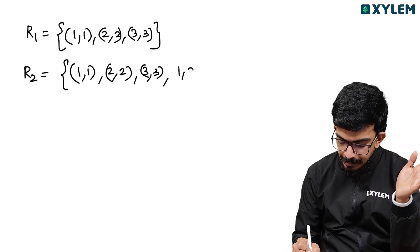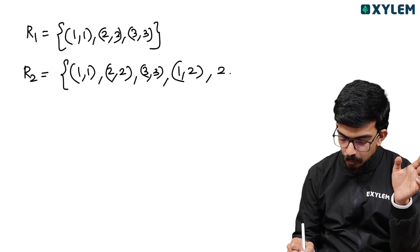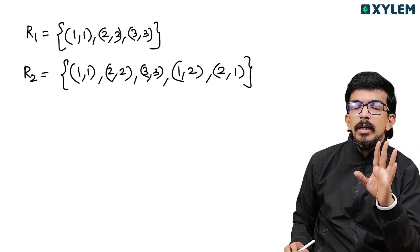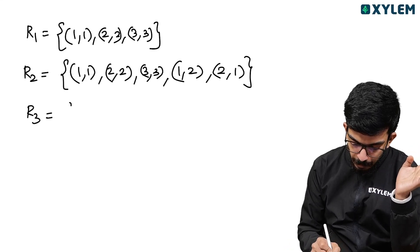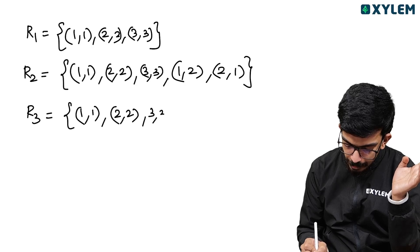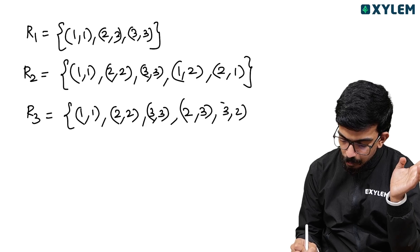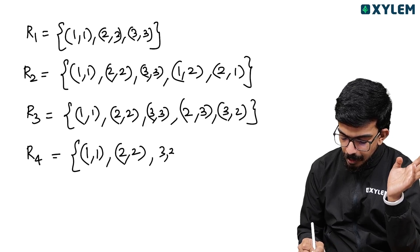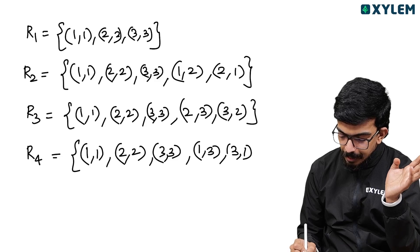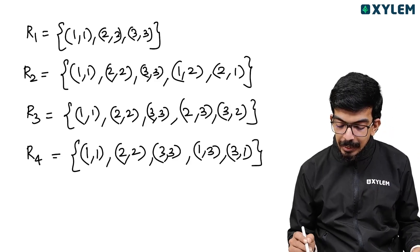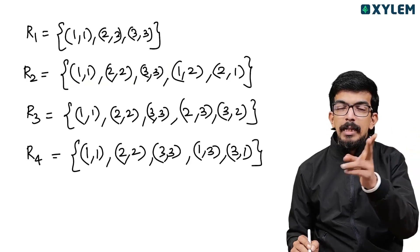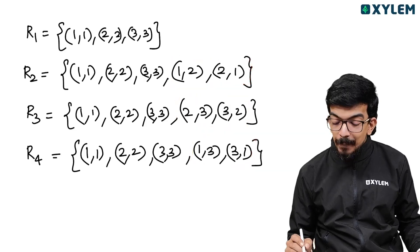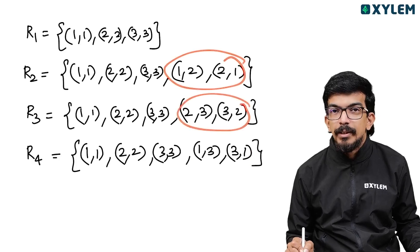R3 is {(1,1),(2,2),(3,3),(2,3),(3,2)} — equivalence. R4 is {(1,1),(2,2),(3,3),(1,3),(3,1)} — equivalence. R5 is the full relation: {(1,1),(2,2),(3,3),(1,2),(2,1),(2,3),(3,2),(1,3),(3,1)} — all 9 pairs. So there are 5 equivalence relations on {1,2,3}.